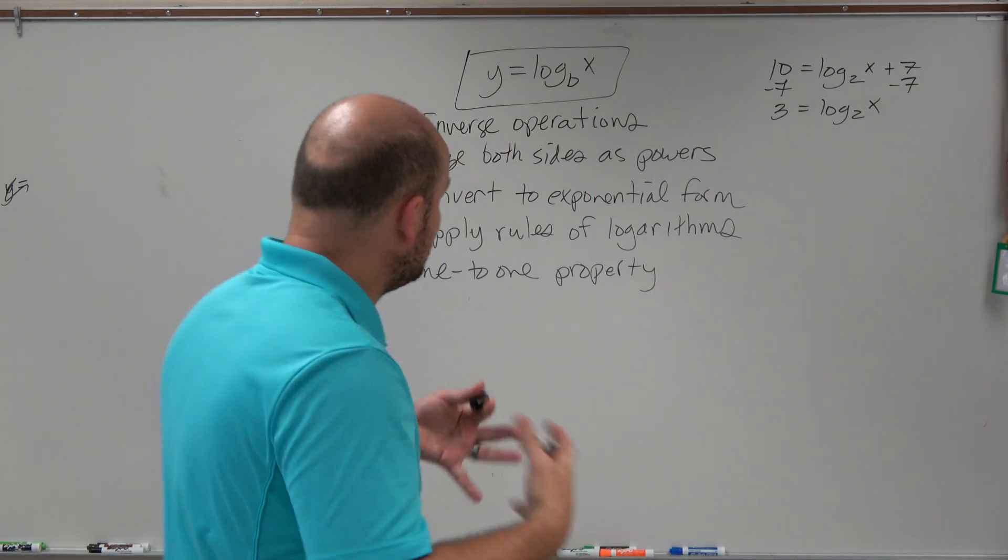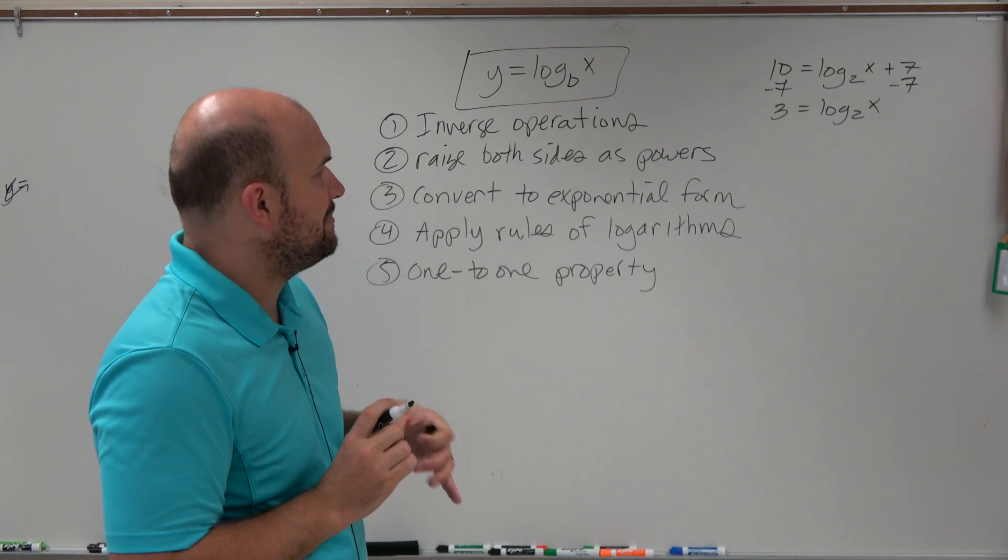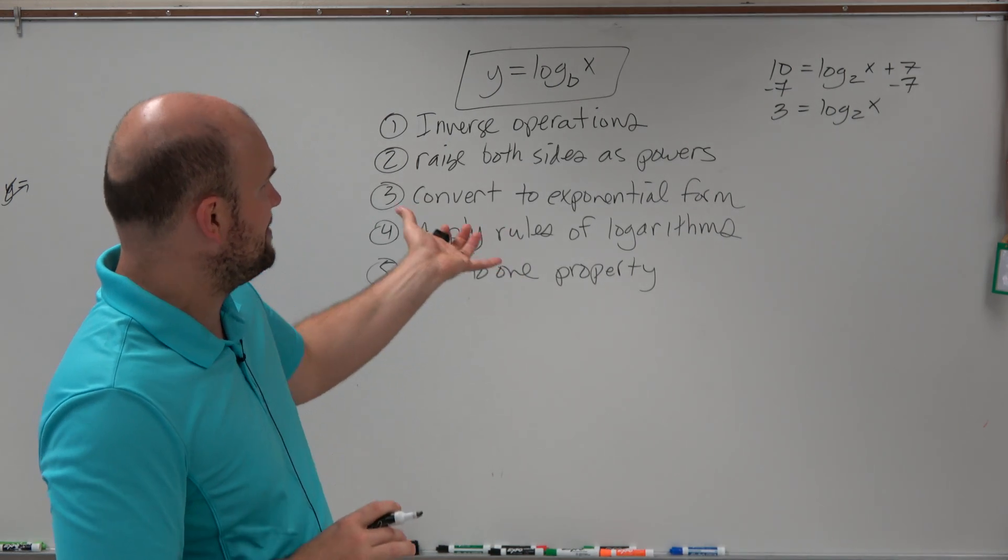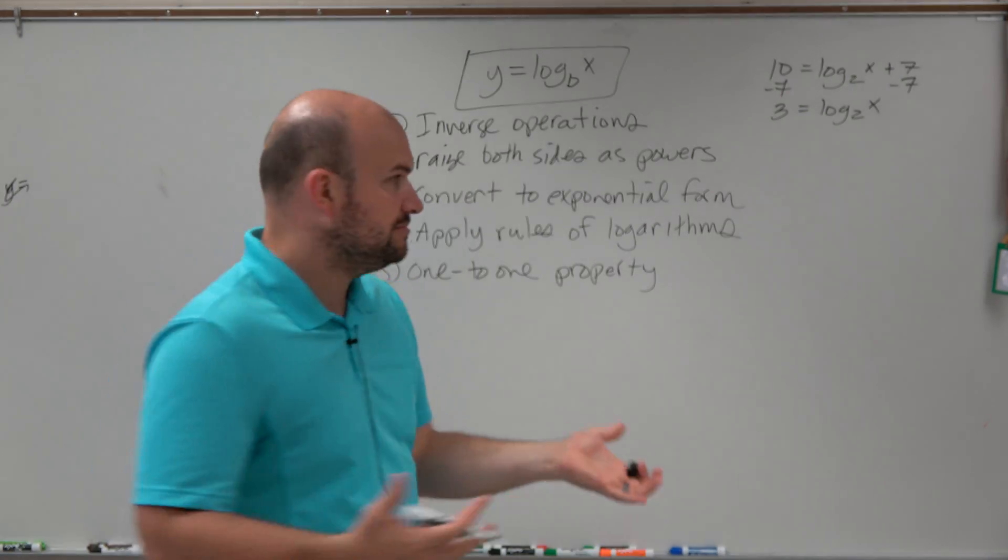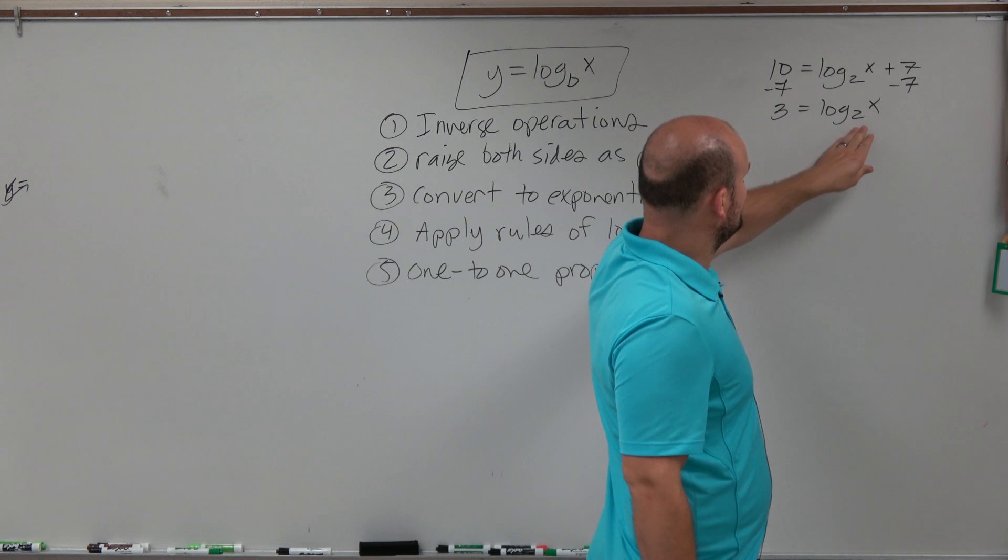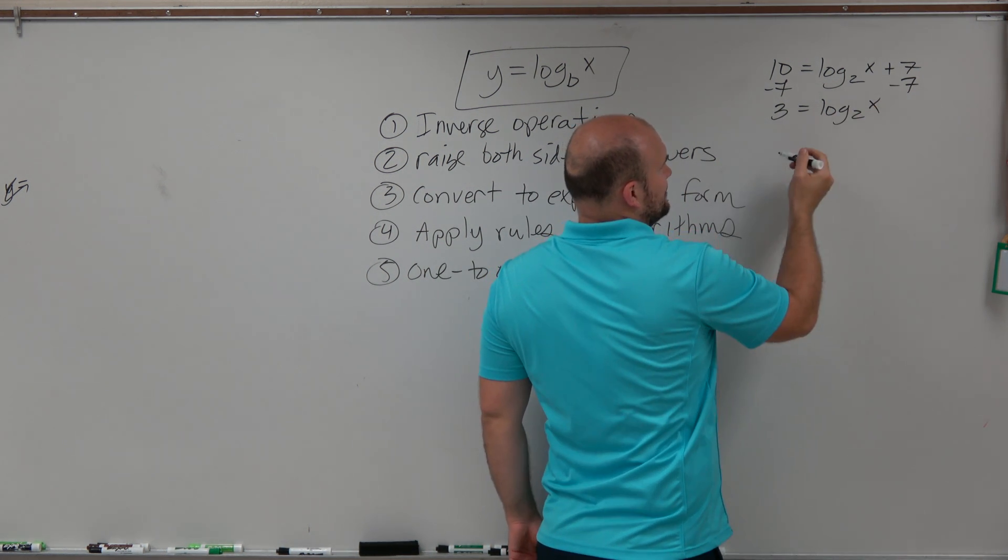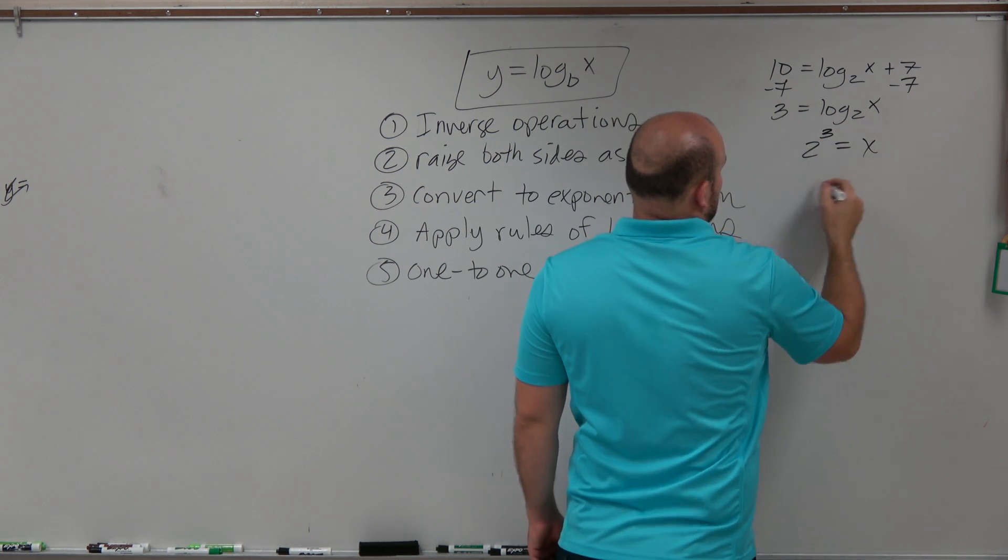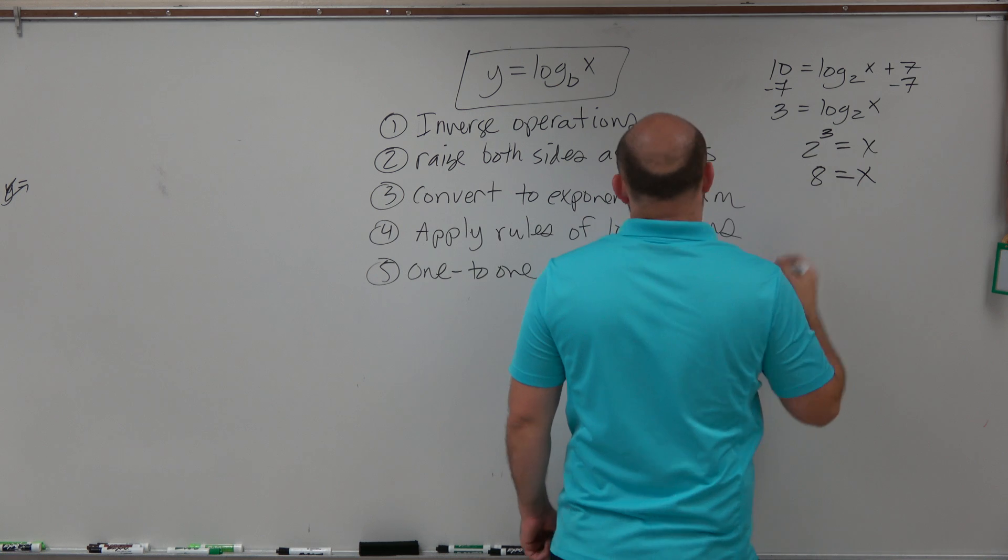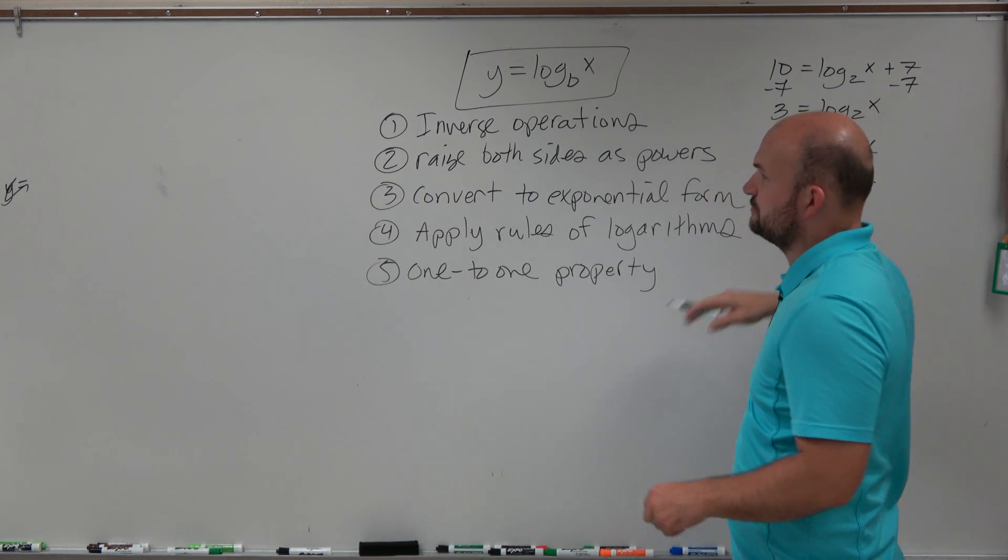So basically now, when doing this, in this example I just applied my inverse operations. I isolated it. Now this might be obvious for you, right? And you could say, well, 2 raised to the third power is going to equal x. So you could just say 2 to the third power equals x, or 8 equals x. And that's the exact same thing as what I did here, is actually converting to exponential form.